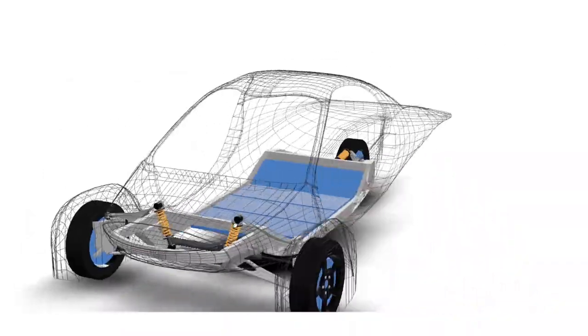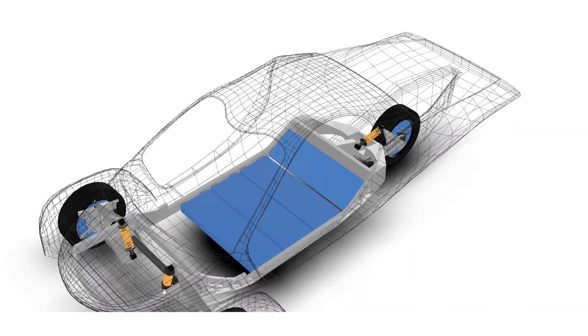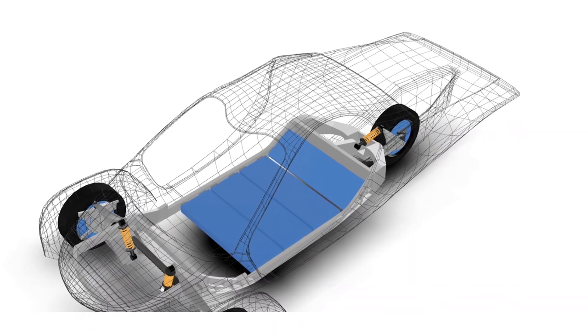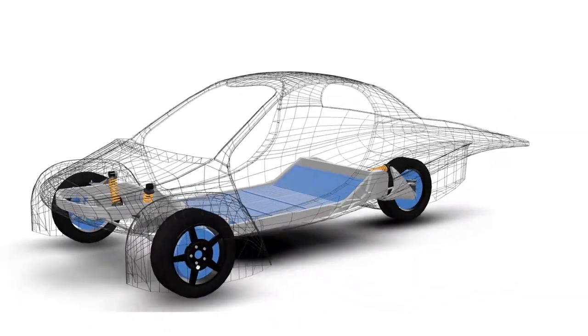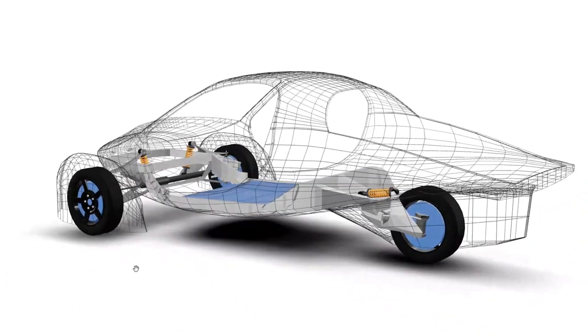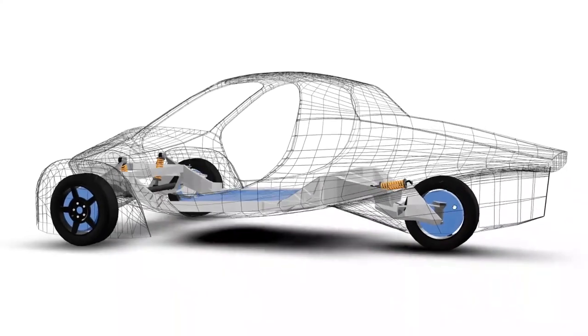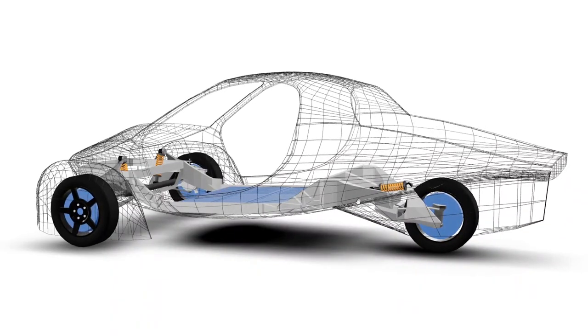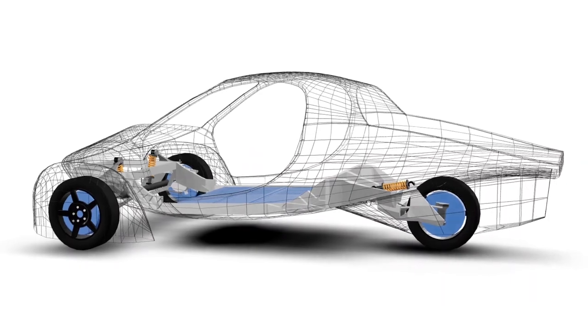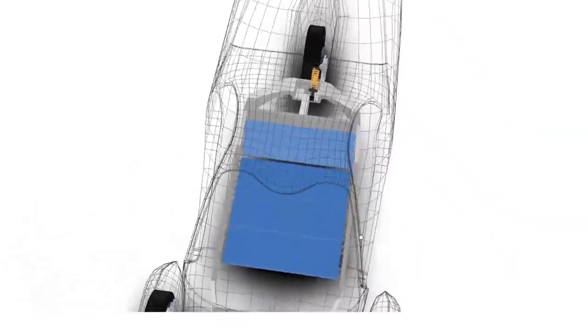And you can see the crumple zones here - there's a bar here to protect you from frontal impacts. And this part is the carbon fiber body. So I think from rear impacts there's a lot of crumple area before it impinges on the passenger compartment. So I think the safety would be quite good.